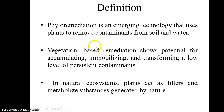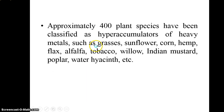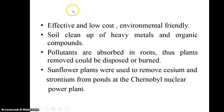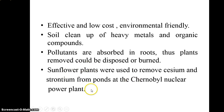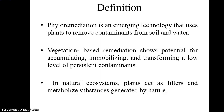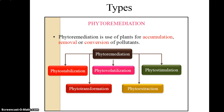Phytoremediation is widely accepted compared to the use of microorganisms because it is the most effective technique, has low cost, and is environmentally friendly. The plants used for phytoremediation can be disposed of or burned. For example, sunflower plants were used at the Chernobyl nuclear power plant to remove contaminants like cesium and strontium.